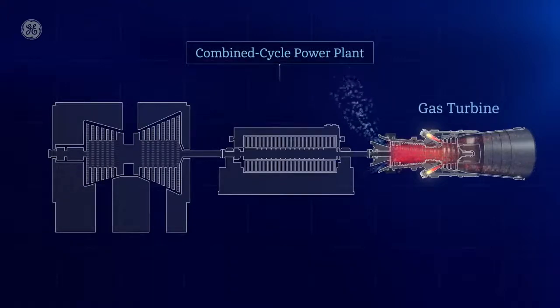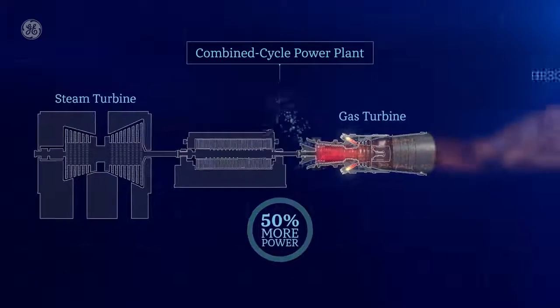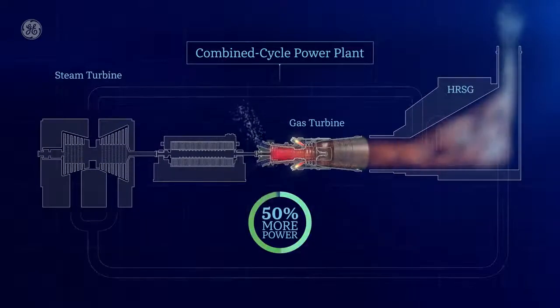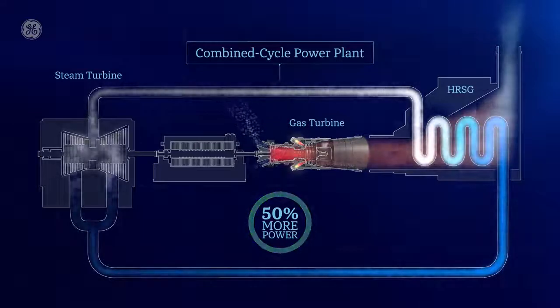The hot exhaust generated from the gas turbine is used to create steam in a boiler, which then spins the steam turbine blades with their own drive shaft that turns the generator.